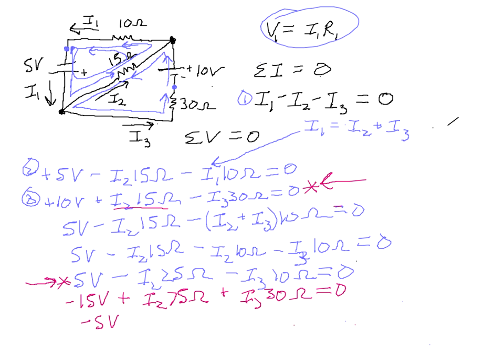Now, 10 volts minus 15 volts is minus 5 volts. The I2 terms combine to give 90 ohms coefficient, and the I3 terms cancel out. So now we can solve for I2. We have only one variable. I2 is minus 5 volts divided by 90 ohms, which is the same thing as negative 1 over 18 amps, or in decimal form 0.0556 amps.